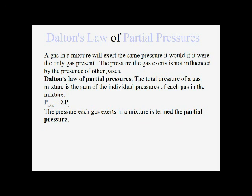Many gases we encounter, such as air, are mixtures. In a gas mixture, several different gases are present and there is an overall pressure of the whole gas. Dalton proposed — and it was proven true — that we can assign an individual pressure to each gas, called the partial pressure. The total pressure of a gas mixture is the sum of the individual partial pressures of each gas present.